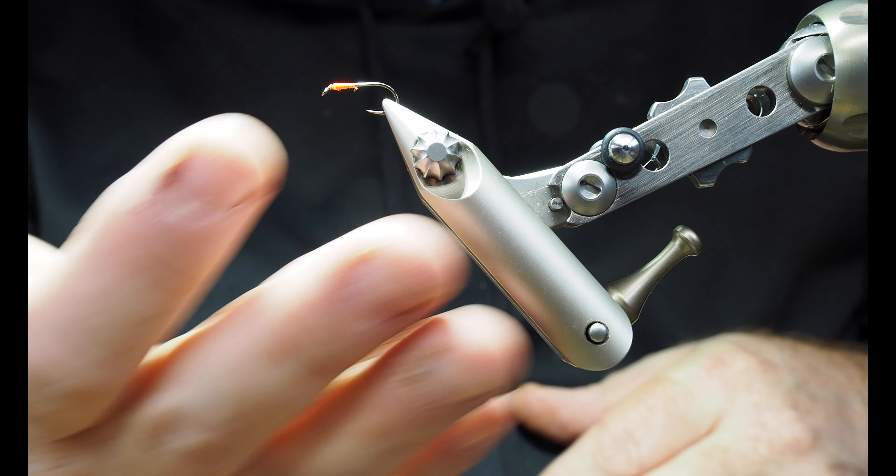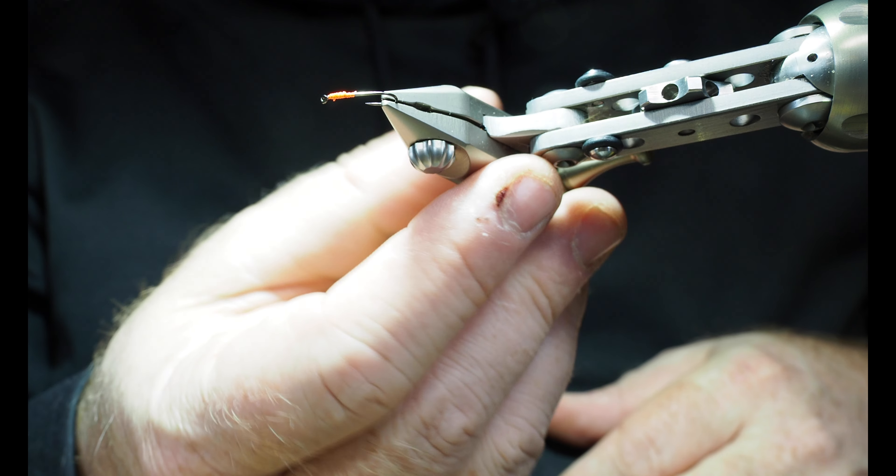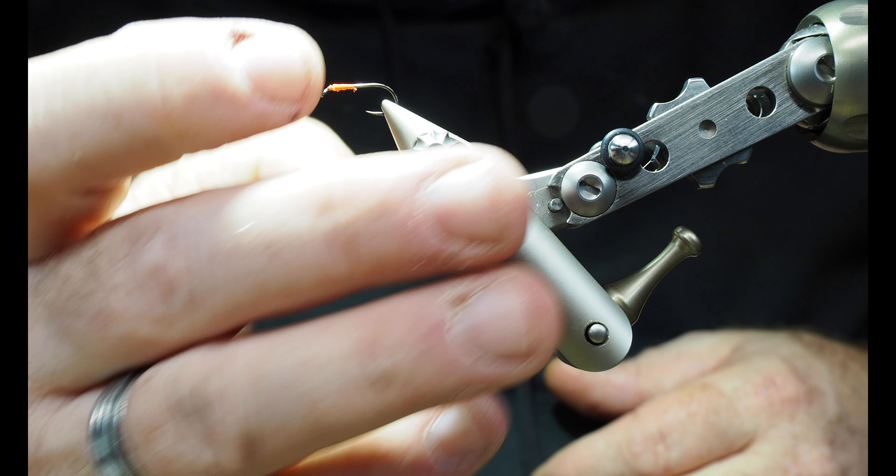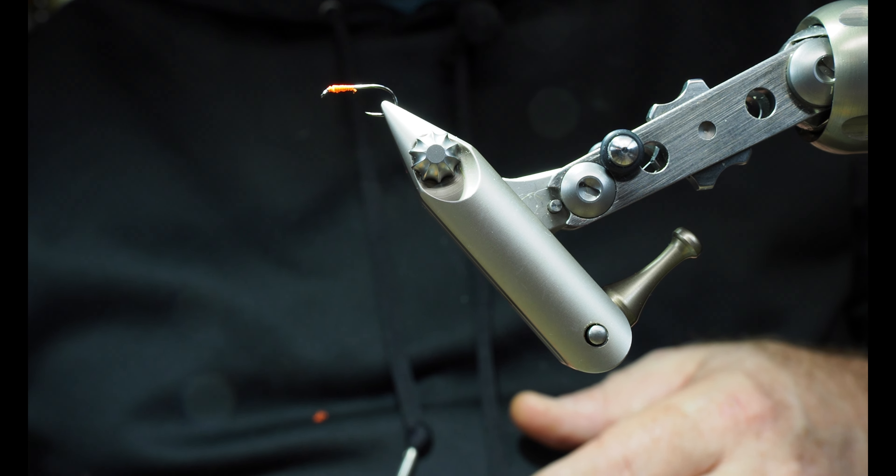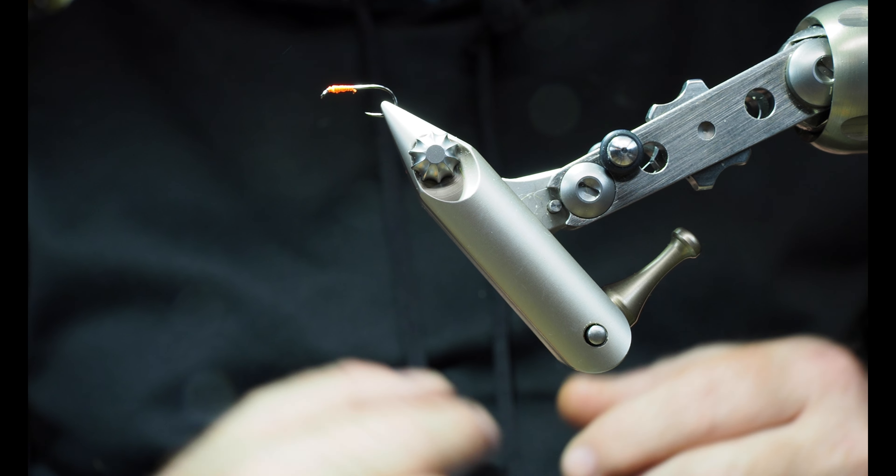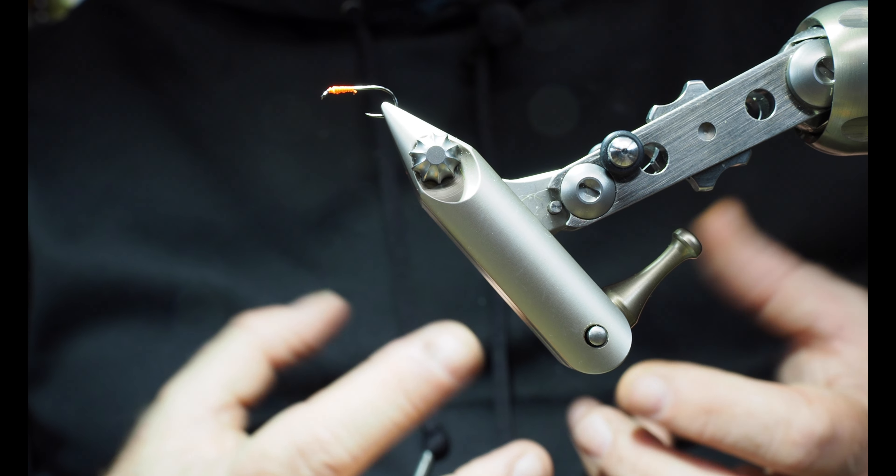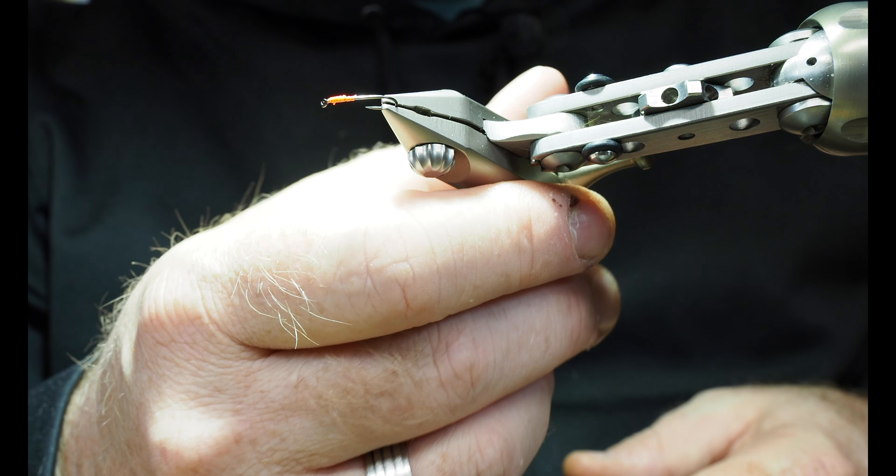And that's going to stay in place. What I'll do at that point is, sometimes most commonly, I'll put a little bit of head cement on the thread wraps there. It just absorbs into that thread, and it'll help keep that knot in place, make your fly a little bit more durable.